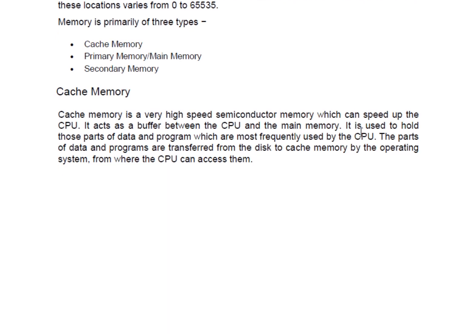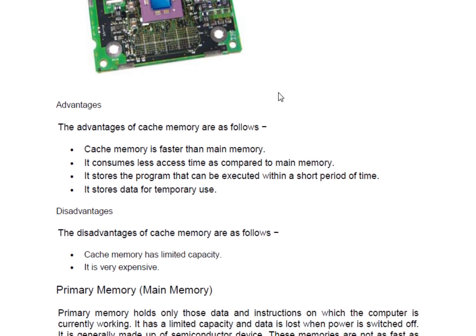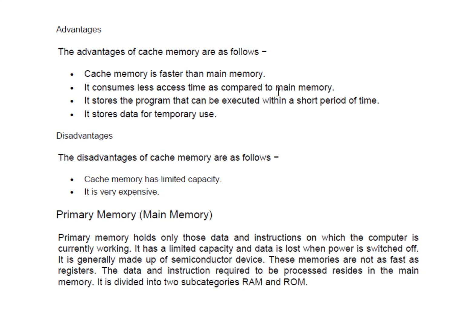Cache memory can only be accessed by the operating system directly — we cannot access cache memory directly ourselves; it is operated and accessed by the operating system only. As you can see in the figure, inside the central processing unit, cache memory is inbuilt in two types: L1 and L2. There are two types of cache memory. Now let's understand the advantages of cache memory.